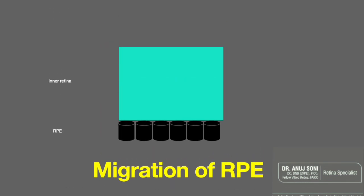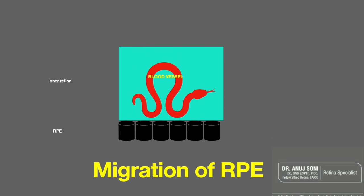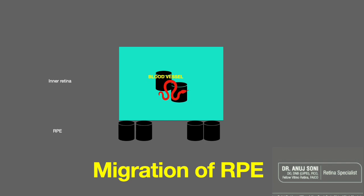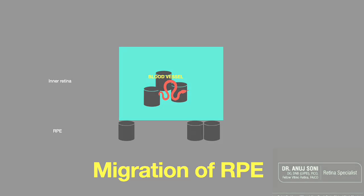With the formation of this blood-retinal barrier, RPE cells lead to formation of tight junctions, and there is deposition of extracellular matrix. This further leads to attenuation of blood vessels, which is characteristically seen in retinitis pigmentosa. This explains why bony spicules form, why they are characteristically perivascular, and why retinal artery attenuation occurs in retinitis pigmentosa.